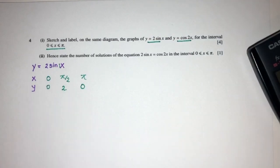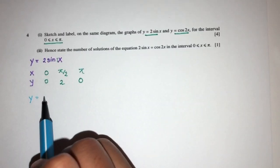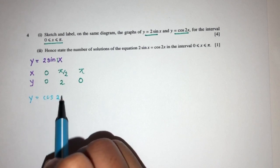As you can see that will be my graph for this one. Now let's move on with the other one. We have y = cos(2x).